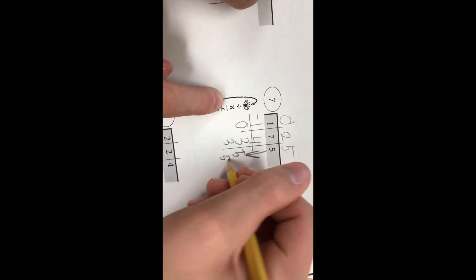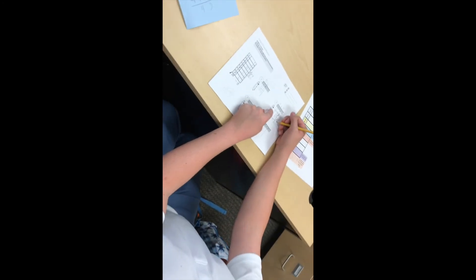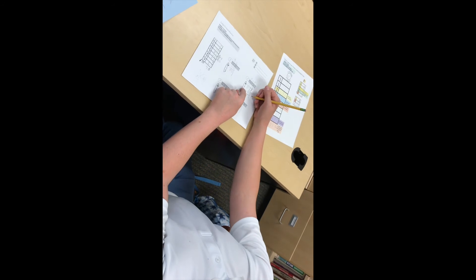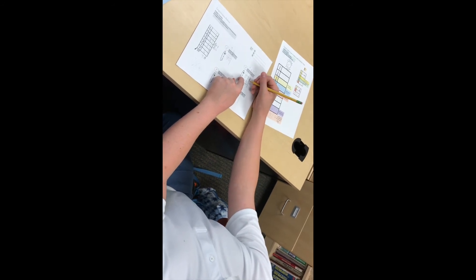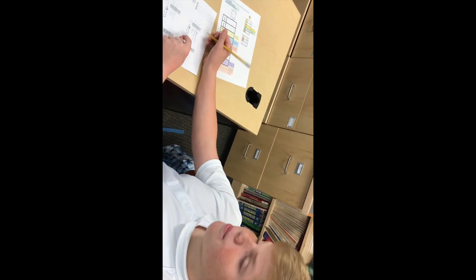So now we're going to subtract. Now, what we're going to want to do is check. Five plus zero is five. Zero plus three is three. Now you can't bring anything down, so you've got to be correct. Good.